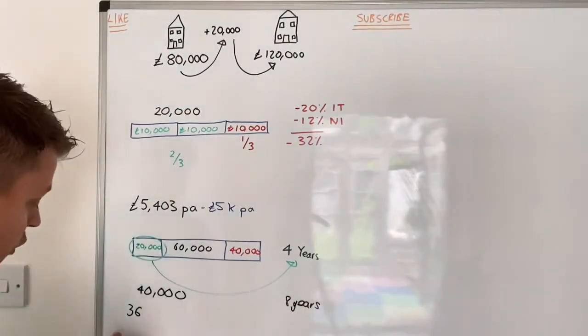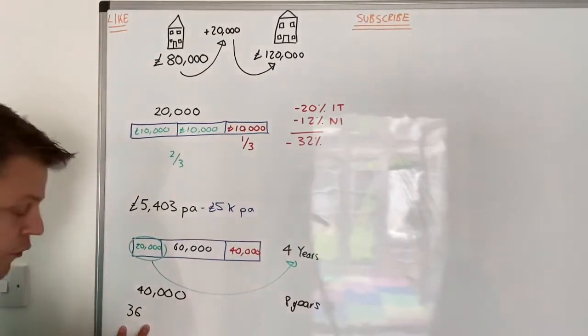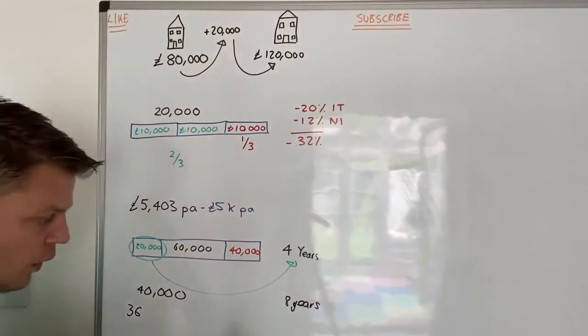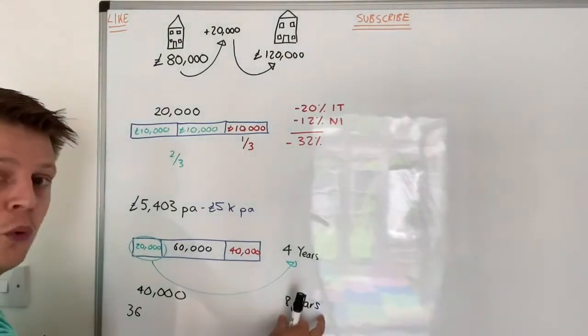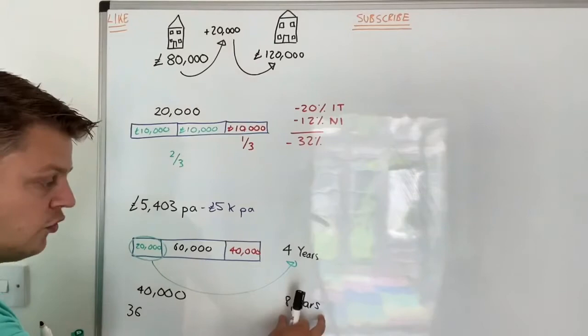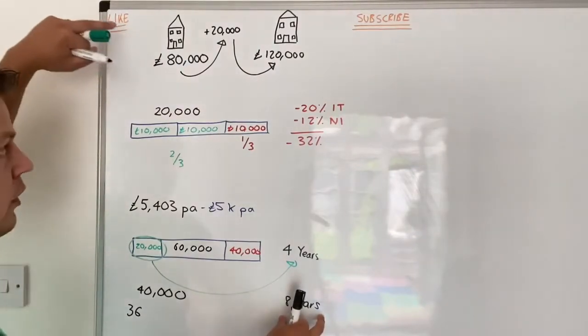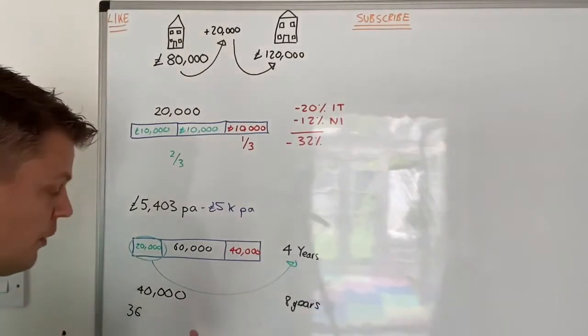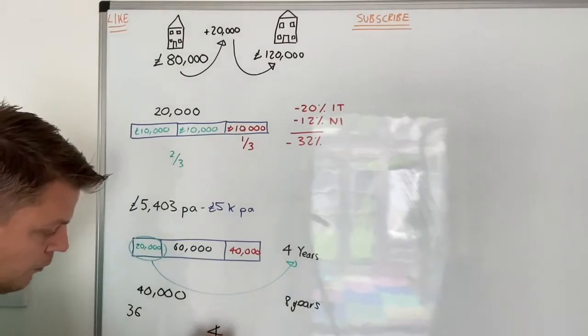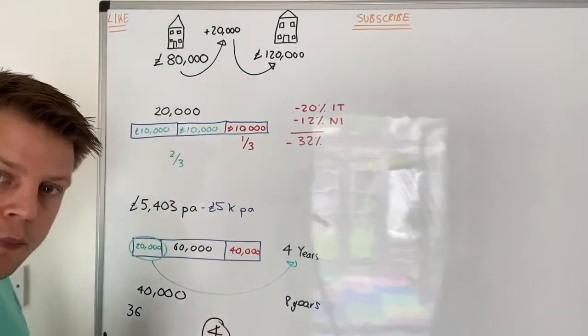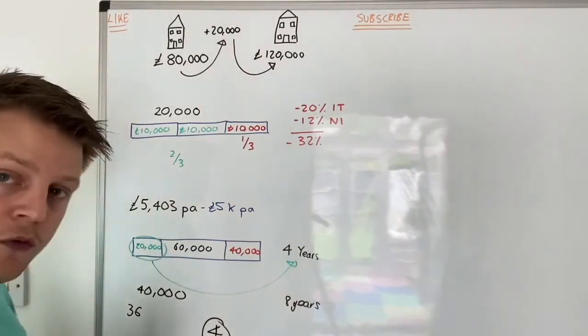The average working life of a UK adult is about 36 years. Let's say it's 32 years. That is 25% of your working life to save up enough money for deposit and refurbishment, which means you're really only able in your working life to buy and refurbish four houses.